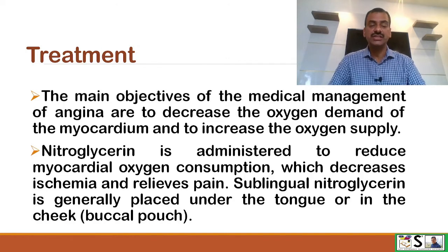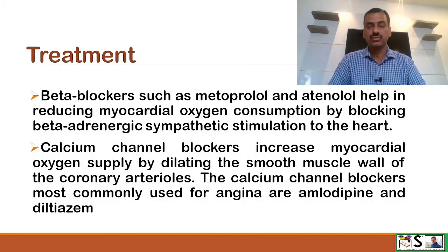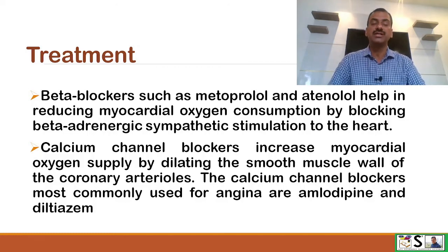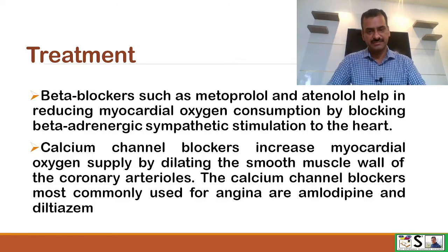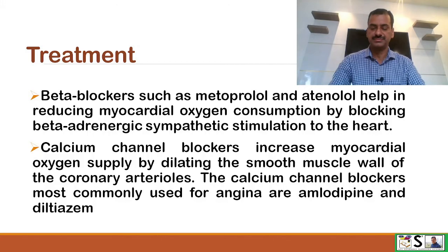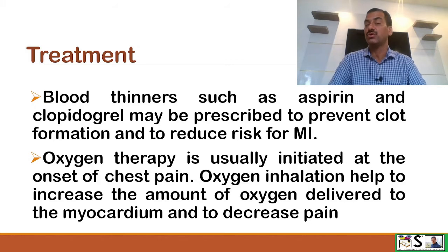Sublingual nitroglycerin is generally placed under the tongue or in the buccal pouch. Beta blockers such as metoprolol and atenolol help in reducing myocardial oxygen consumption by blocking beta-adrenergic sympathetic stimulation to the heart. Calcium channel blockers increase myocardial oxygen supply by dilating the smooth muscles in the coronary arteries. The most commonly used calcium channel blockers for angina are amlodipine and diltiazem. Blood thinners such as aspirin and clopidogrel may be prescribed to prevent clot formation and reduce risk of MI.